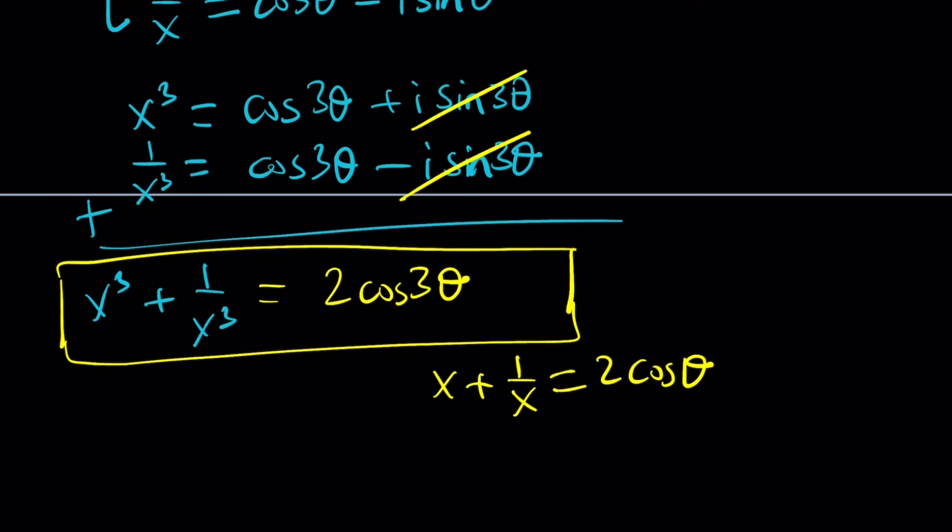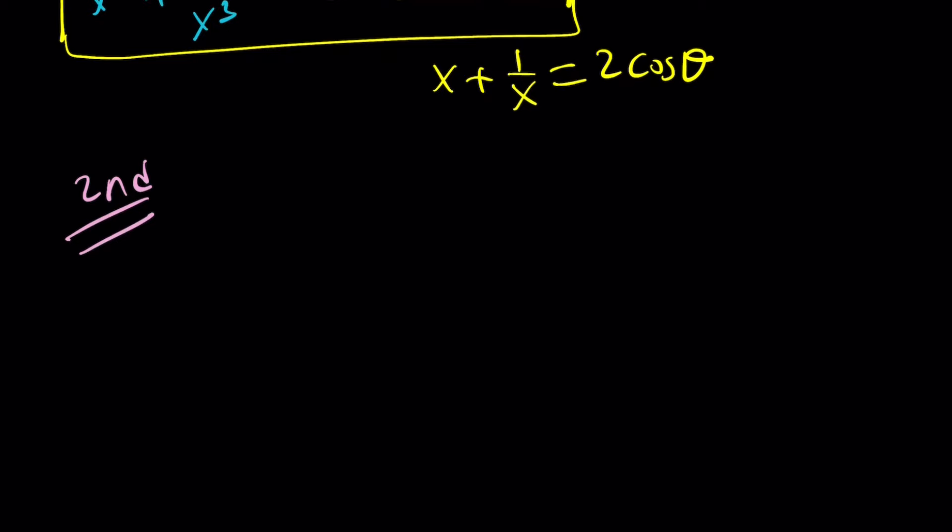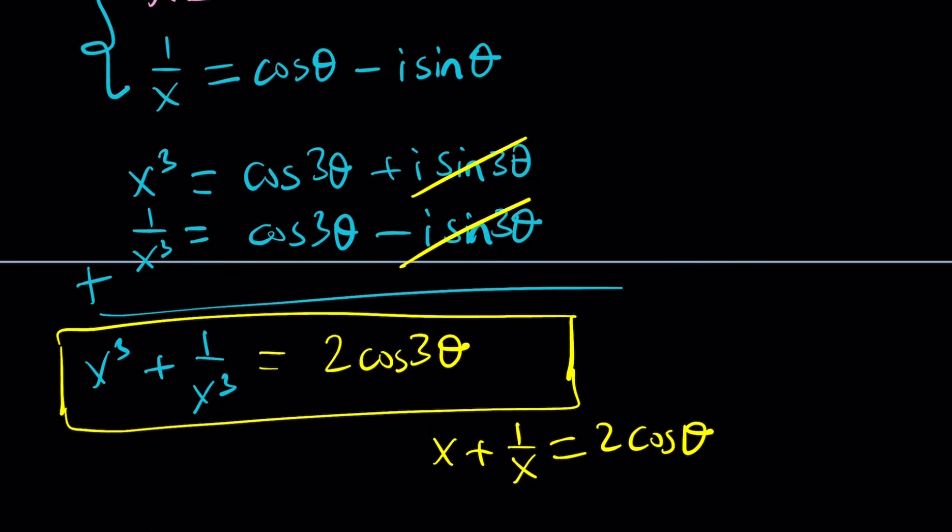Ready for the second method? Okay. Let's proceed. So for my second method, I'm going to do the following. I know that x plus 1 over x is equal to 2 cosine theta. And by the way, let me tell you something about the first method before I get into the second.